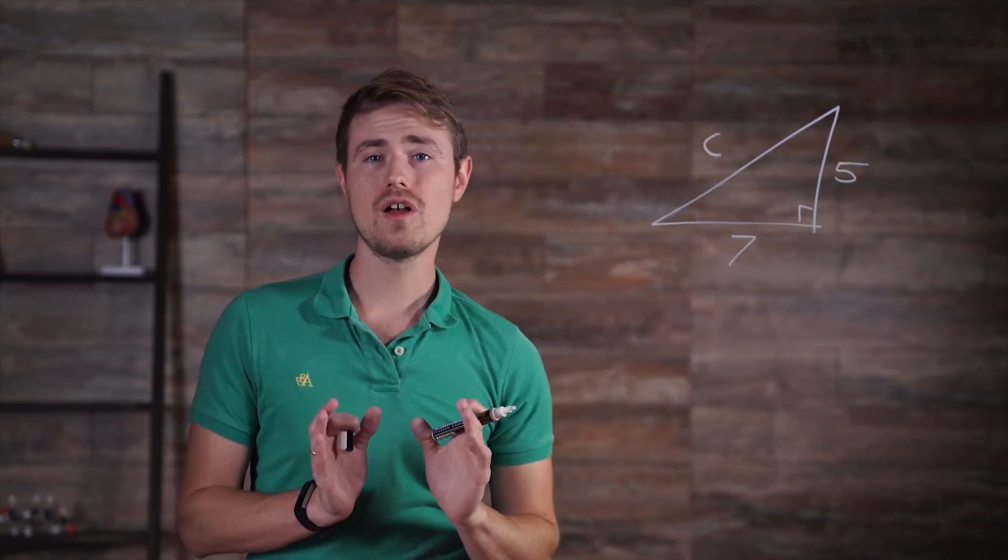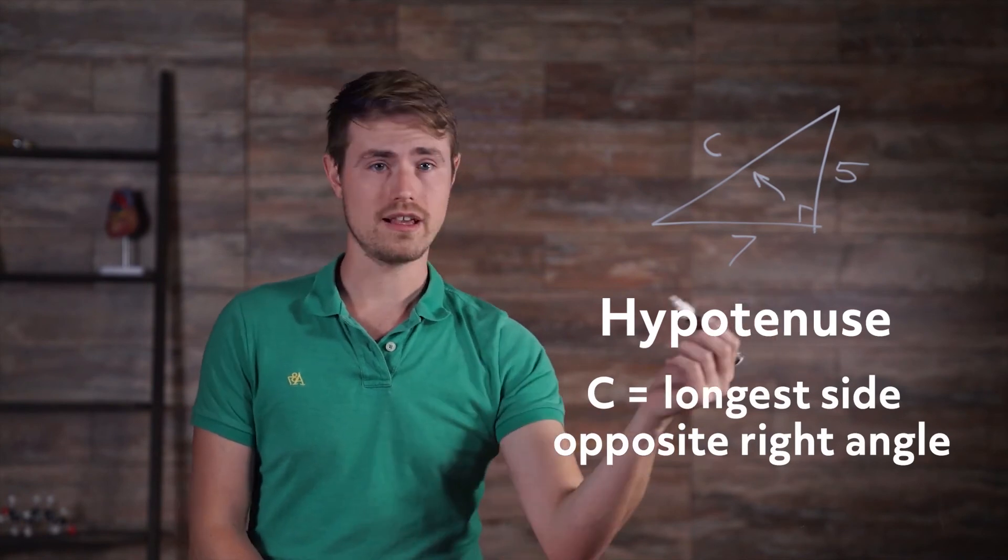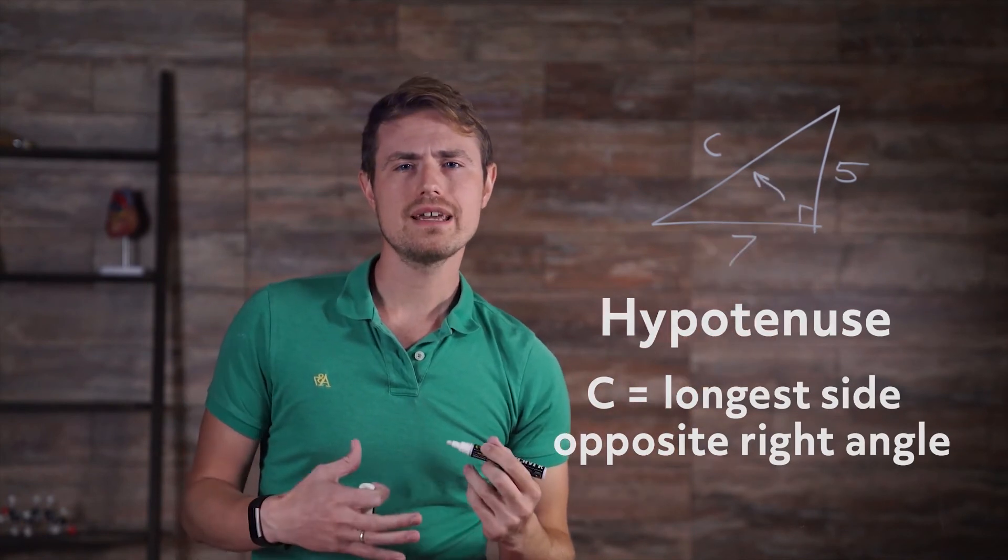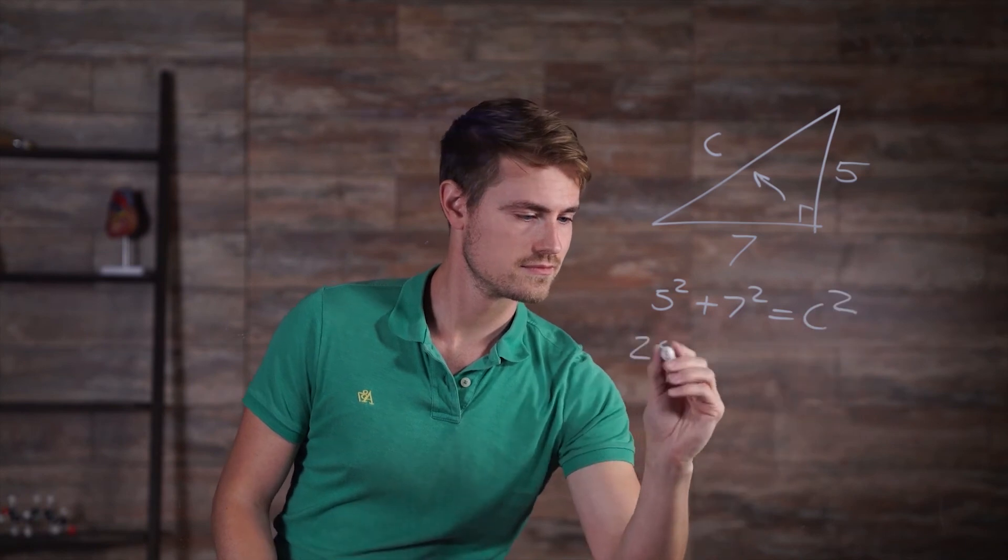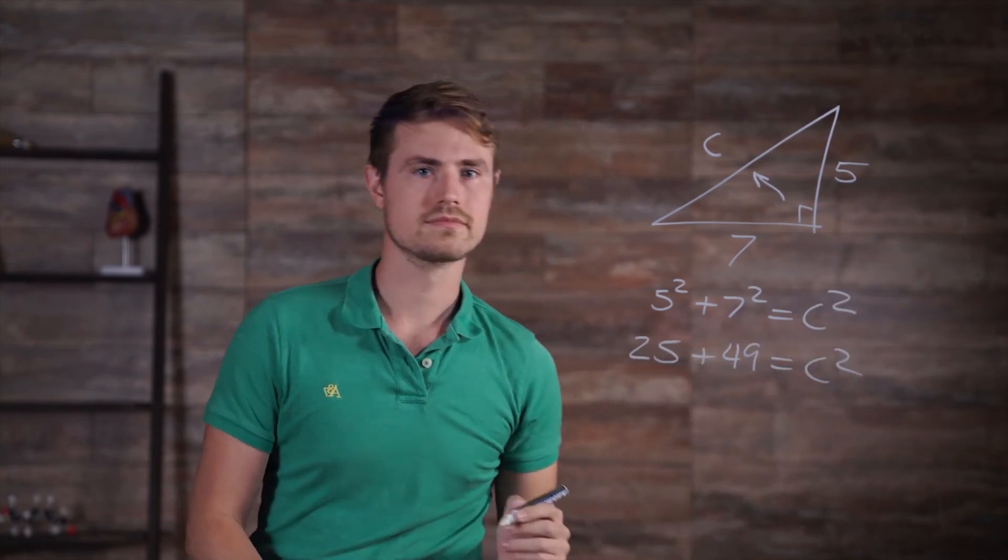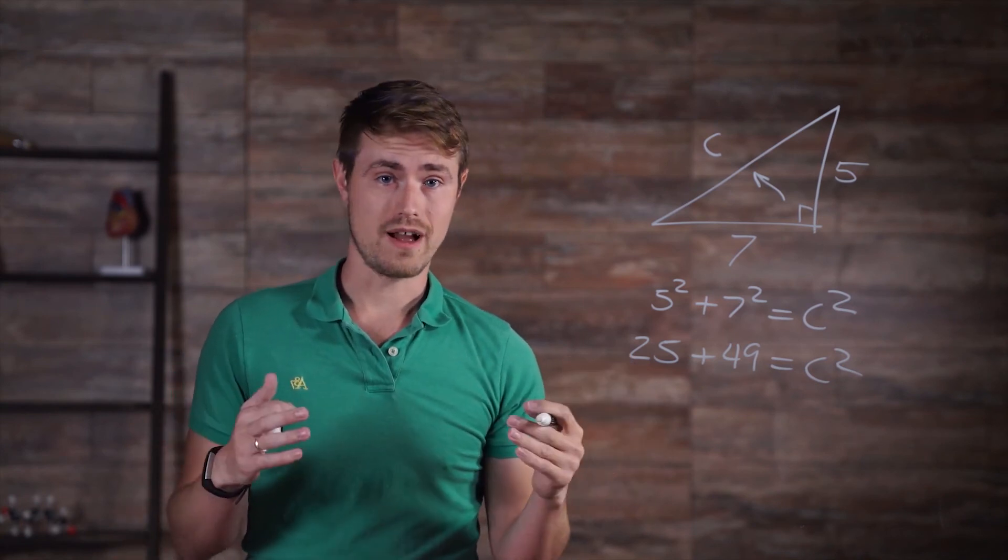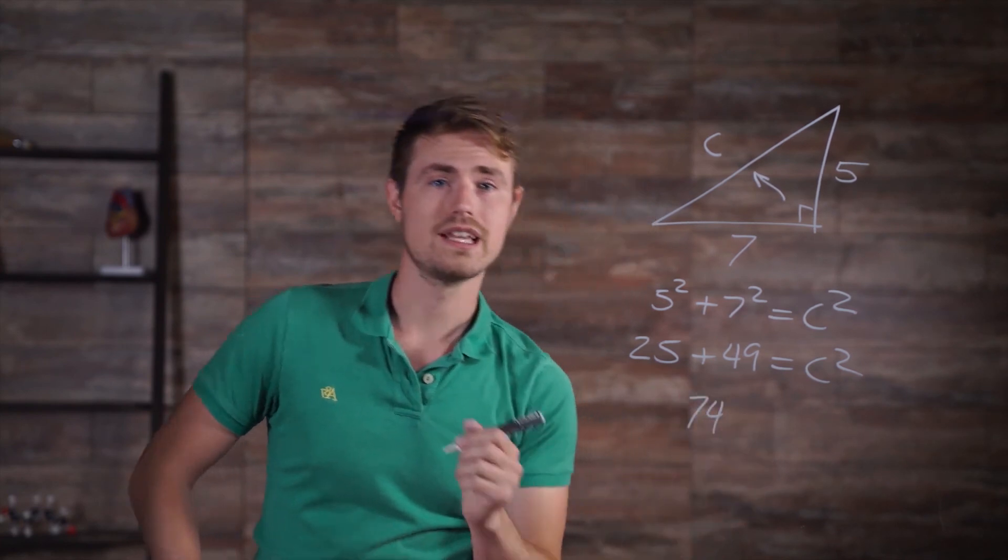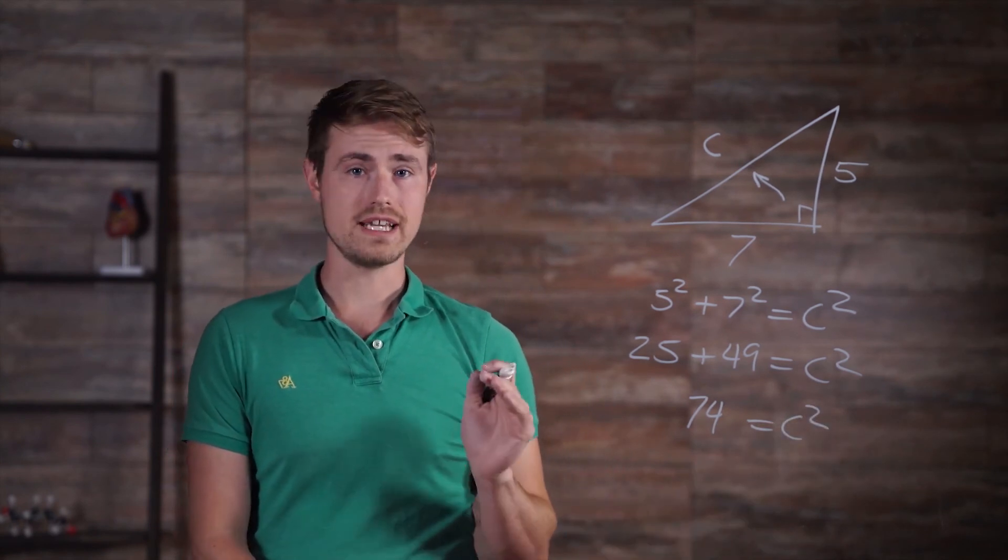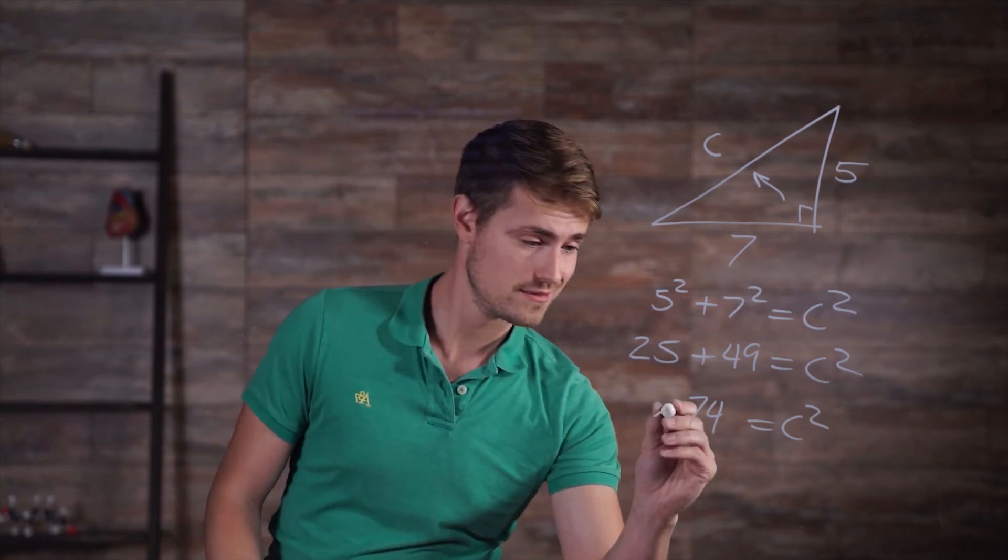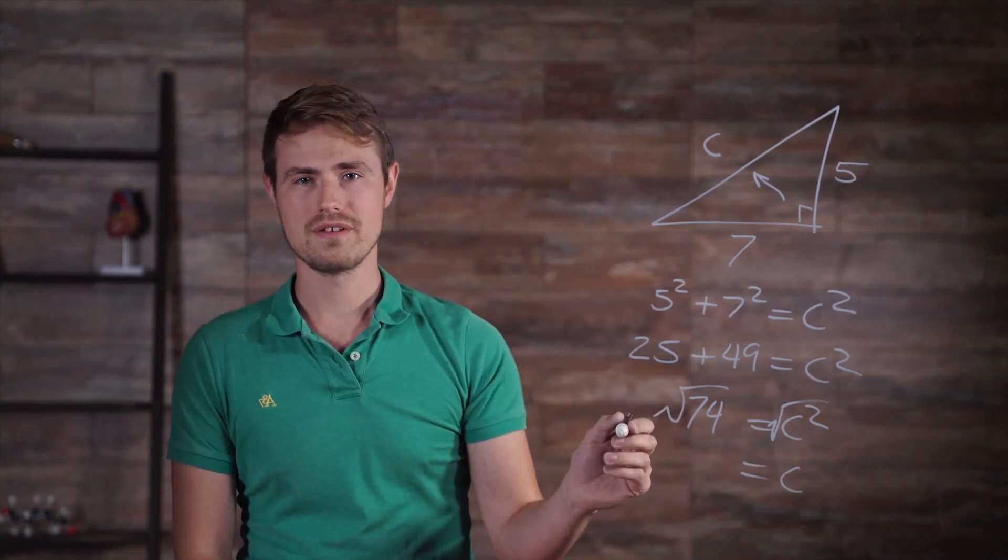Once again, we're solving for the hypotenuse, the longest side, which is opposite the 90 degree or right angle. This is length C. When we plug in 5 and 7 for A and B, we get this. 25 plus 49 is equal to C squared. So let's add 25 and 49 to get 74, which is equal to C squared. Then we take the square root of each side and find out that the square root of 74 is equal to C.